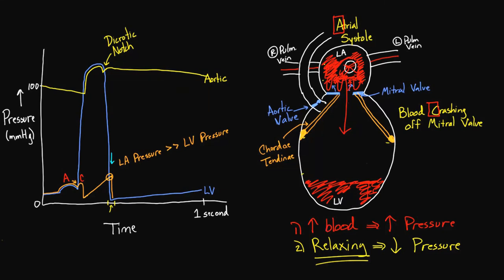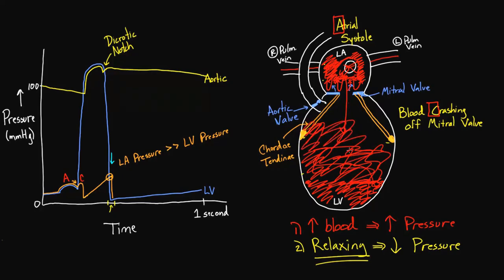When that last bit of contractile pressure goes away, you have nothing but filling. The left ventricle slowly fills back up, and the pressure gradually rises again. Similarly, the left atrium rises because they're once again a continuous space. You can see a third feature in the atrial pressure tracing — a spike which we call V. You can remember it as representing the very full left atrium.